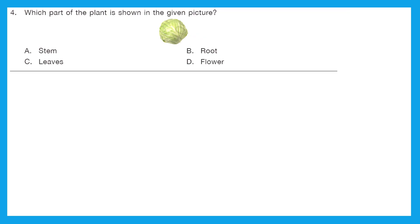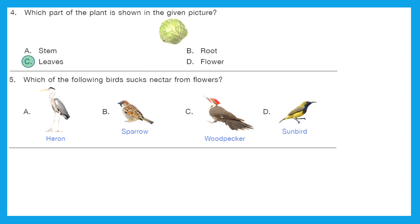Question 4: Which part of the plant is shown in the given picture? The picture is of cabbage. If you look at cabbage, it is all made up of leaves — it is the leaves of a plant. Option C is the right answer. Question 5: Which of the following birds sucks nectar from flowers?